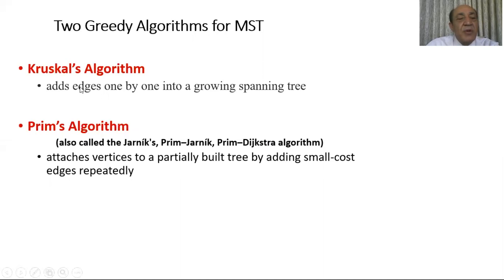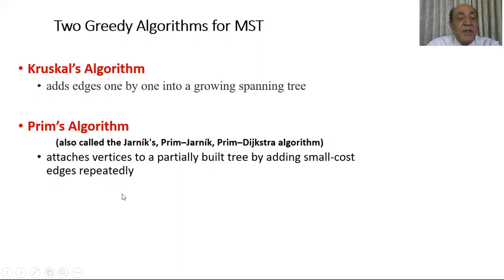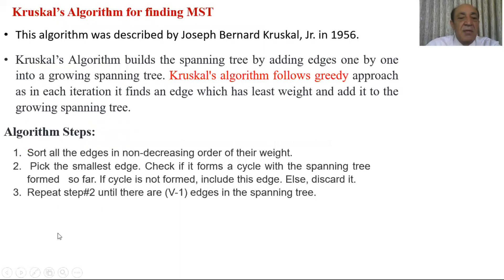In Kruskal's algorithm, the basis used is edges and extra vertices. The main idea is that we sort the edges in ascending order and start picking edges, checking each time that no cycles are formed, until we pick n minus one edges, where n is the number of vertices in the graph. Prim's algorithm attaches vertices to a partially built tree by repeatedly adding the smallest cost edge. Today we start with Kruskal's algorithm, and in the next meeting I will explain Prim's algorithm.